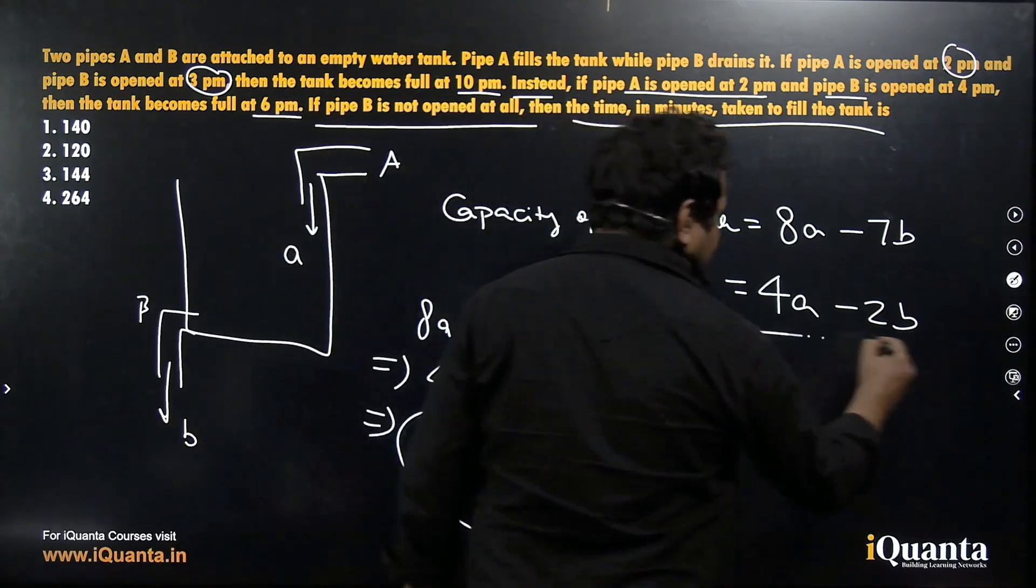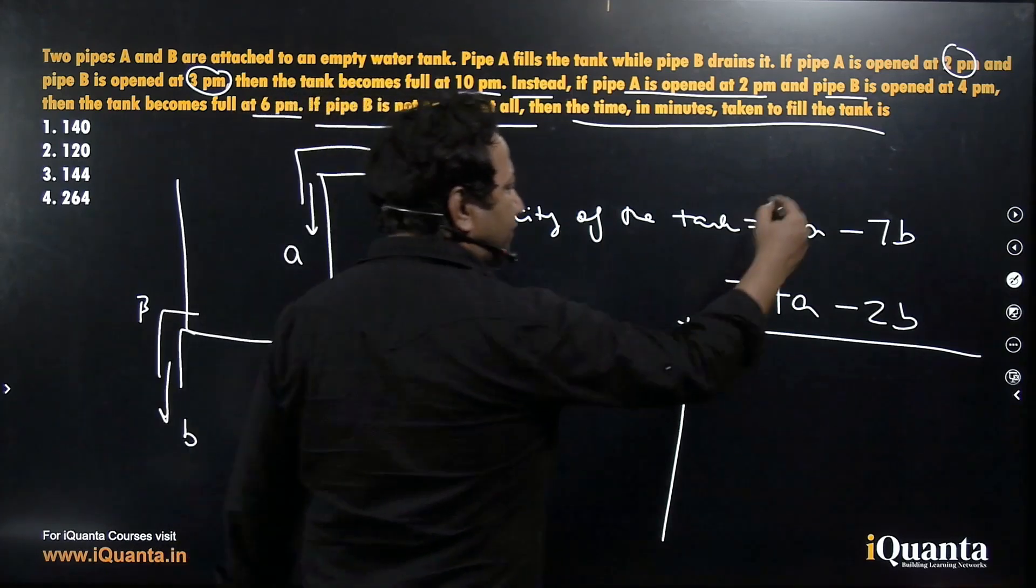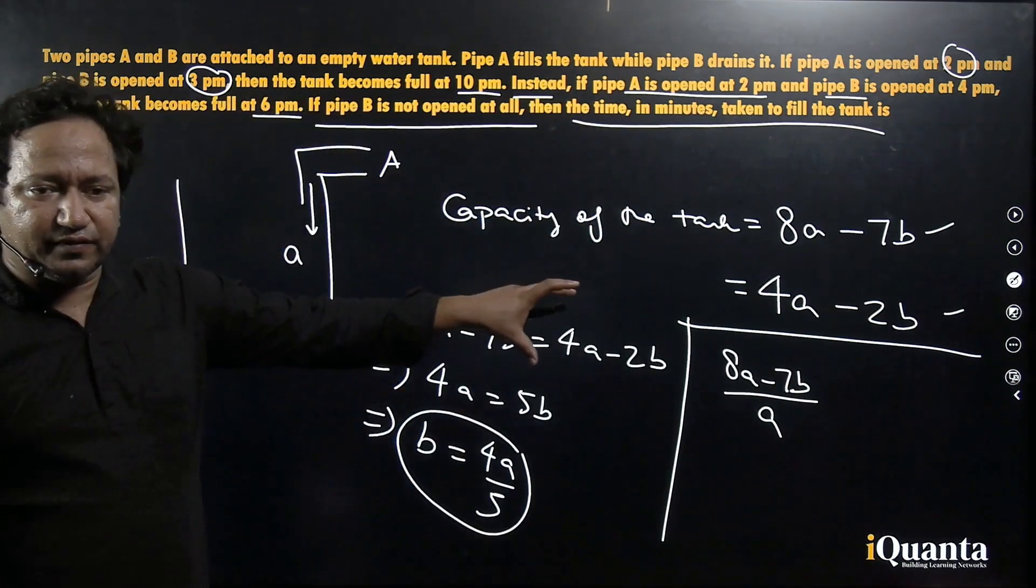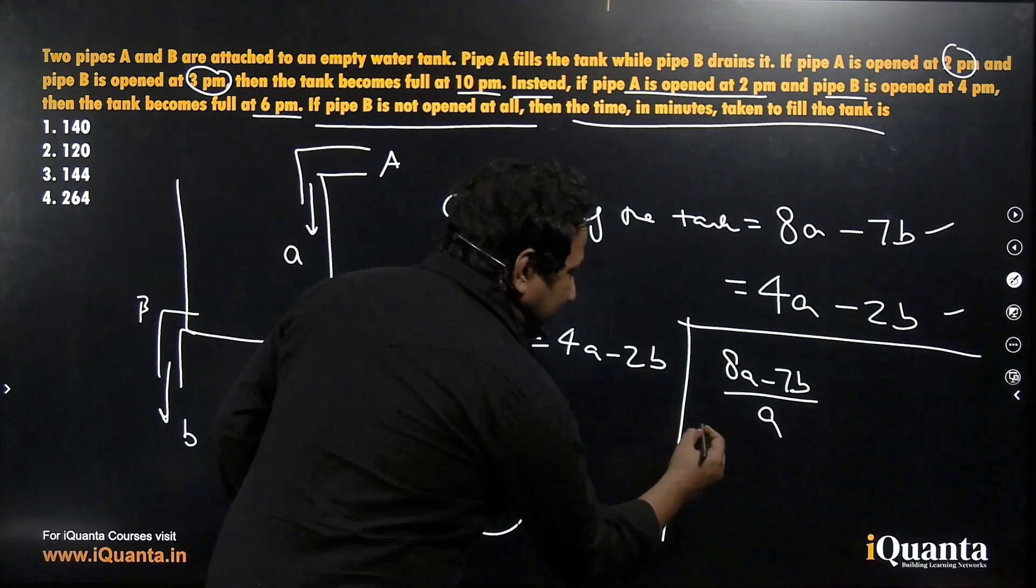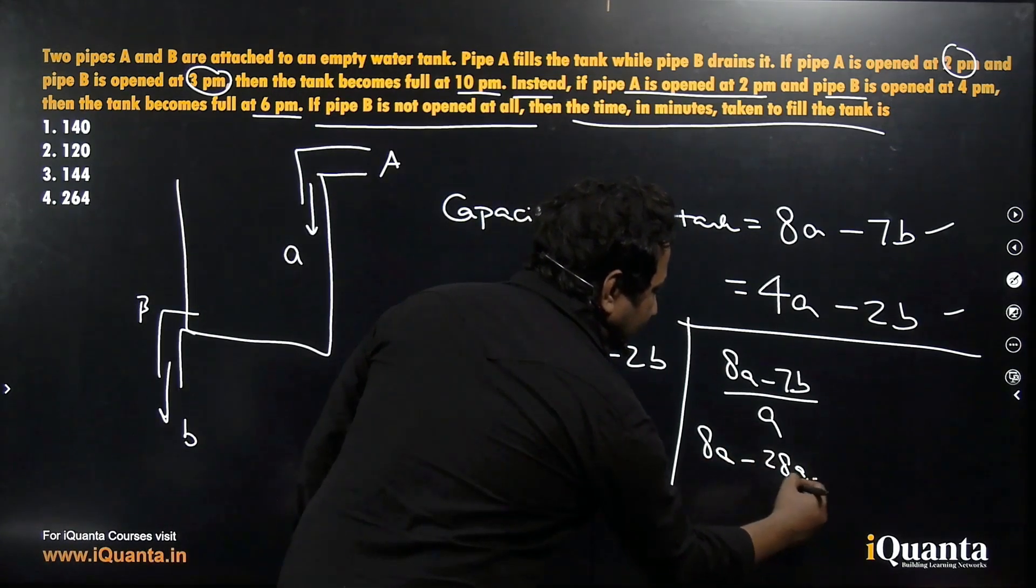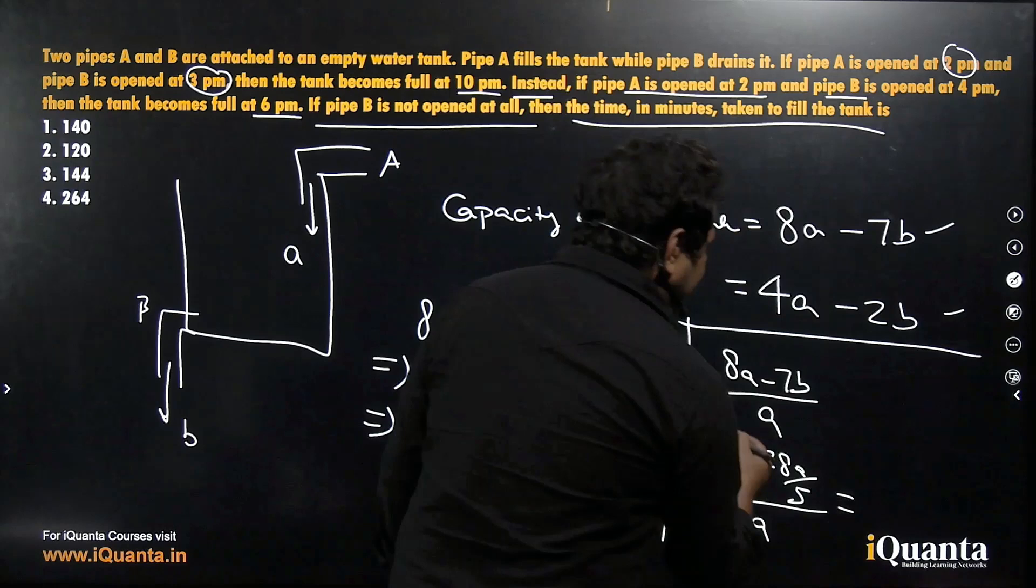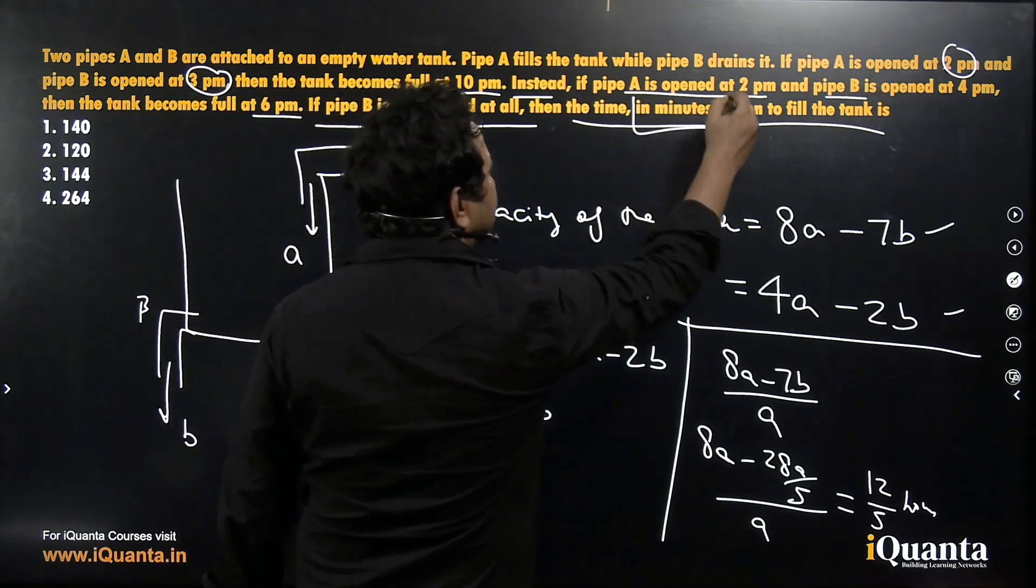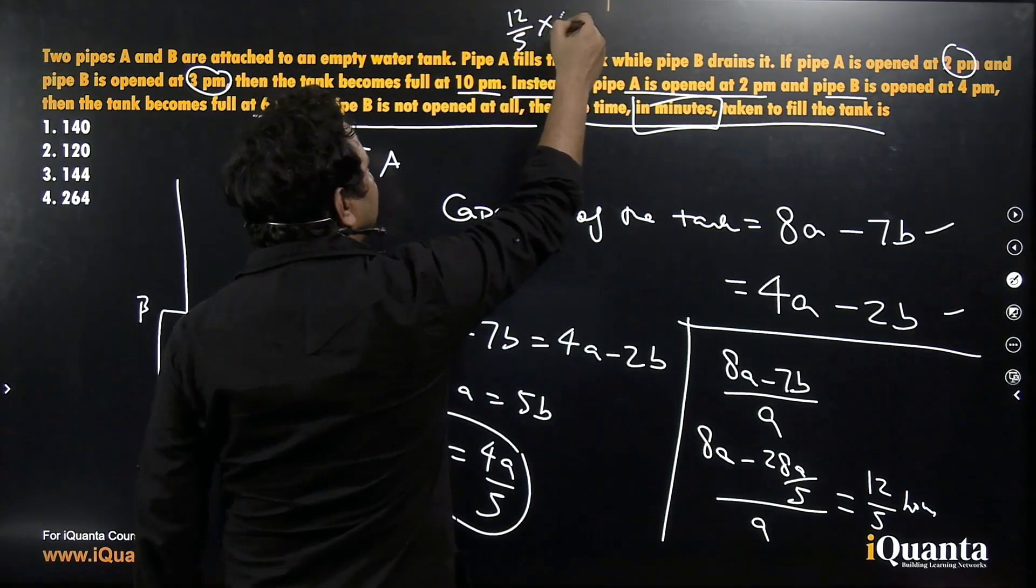Once we have got this, we will do the main calculation. So if the capacity of tank is divided by the efficiency of pipe A, we will get our answer. Capacity of tank, I can use either of the expressions. This or this. Let us use the first one. So 8A minus 7B upon A should be our answer. Capacity of tank divided by the efficiency of pipe A. Let us put the value of B in terms of A. What do we get now? We will get 8A minus 7 times 4A by 5. That is 28A by 5 whole upon A. As you can see, A can be taken common and it can be cancelled. 8 minus 28 by 5. If you solve this, you will get 12 upon 5 hours. It's 12 upon 5 hours. The question talks about minutes. So 1 hour contains 60 minutes. That is common knowledge. 12 upon 5. If I multiply it by 60, I will get the answer in minutes. That is 144. We will mark option 3.